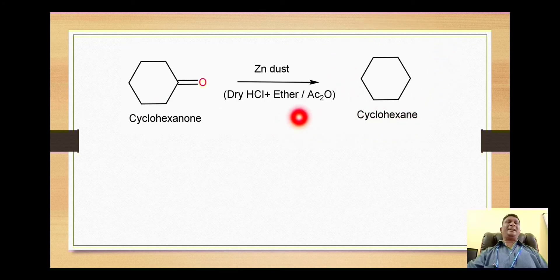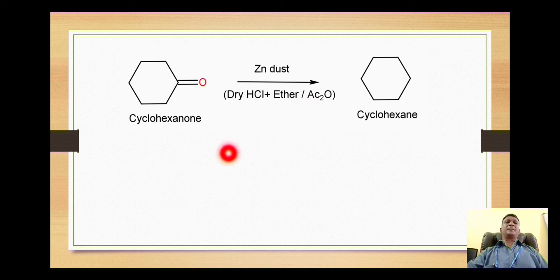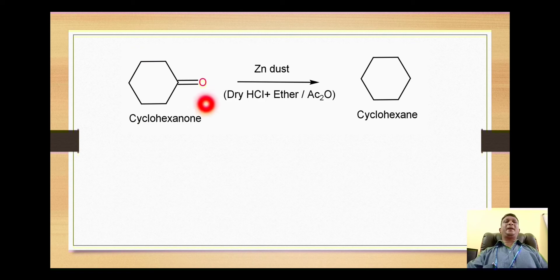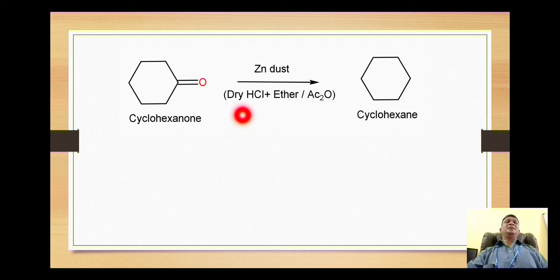When cyclohexanone undergoes Clemmensen reduction, it gives formation of cyclohexane — the doubly-bonded oxygen is replaced with two single bonds with hydrogen. For cyclic ketones, we will use zinc dust with dry hydrochloric acid and ether mixture. This dry HCl plus ether mixture means both HCl and ether should be free from water molecules.